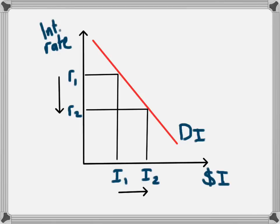By decreasing the level of interest from R1 to R2, there will be an increase in investment, seen here as an increase from I1 to I2. So the decrease in interest leads to an increase in investment on the second diagram.